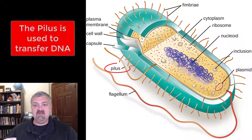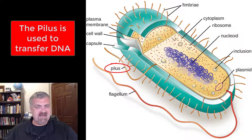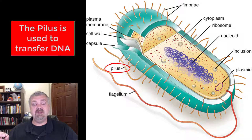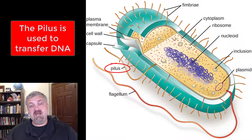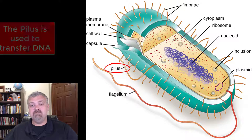Next we have the pilus. An organism that has a pilus would typically have just one or two. The pilus is generally used to transfer DNA. While it can be used for attachment and movement, the most important thing the pilus does is transfer genetic material in a process called conjugation — so it may also be called a sex pilus or conjugation pilus.